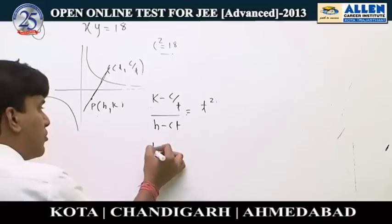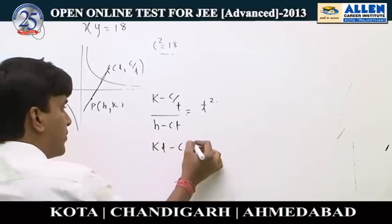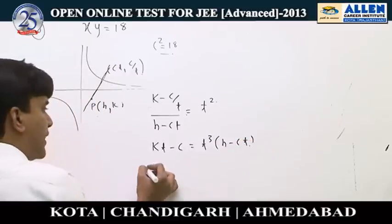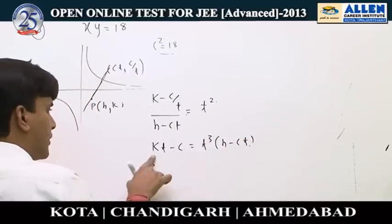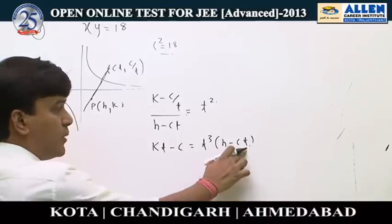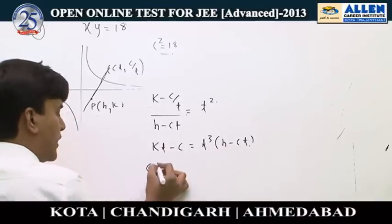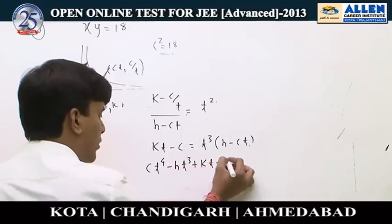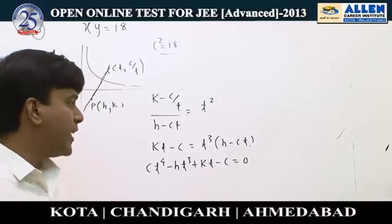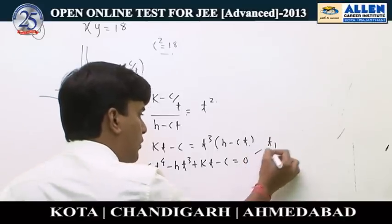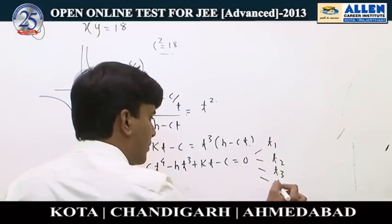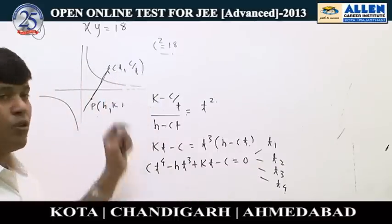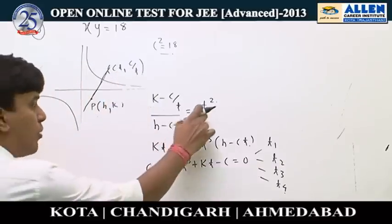Setting up the normal condition: k minus c/t divided by h minus ct equals t², which gives ct⁴ minus ht³ plus kt minus c equals 0. This is a biquadratic in t with four roots t1, t2, t3, t4. The sum of slopes of the four normals is t1² plus t2² plus t3² plus t4², which is given to equal 2.